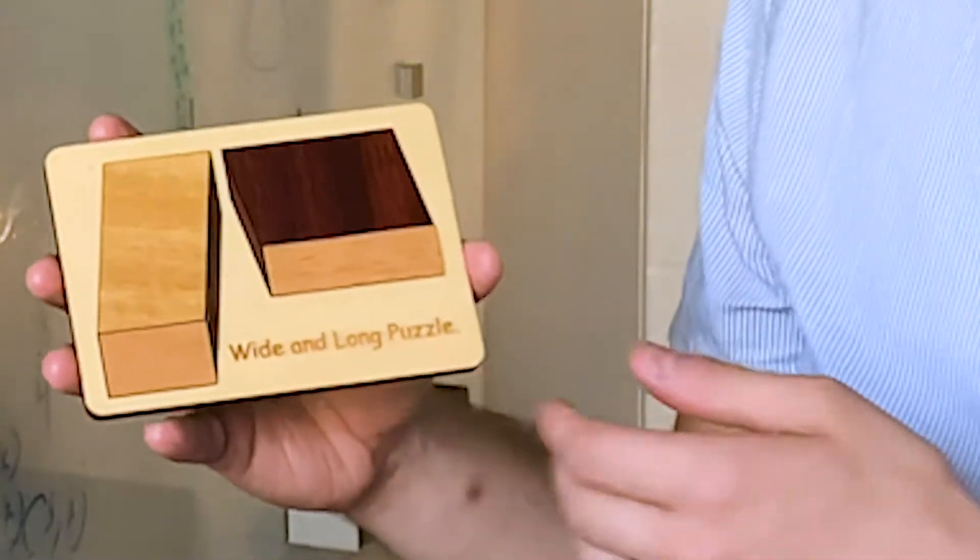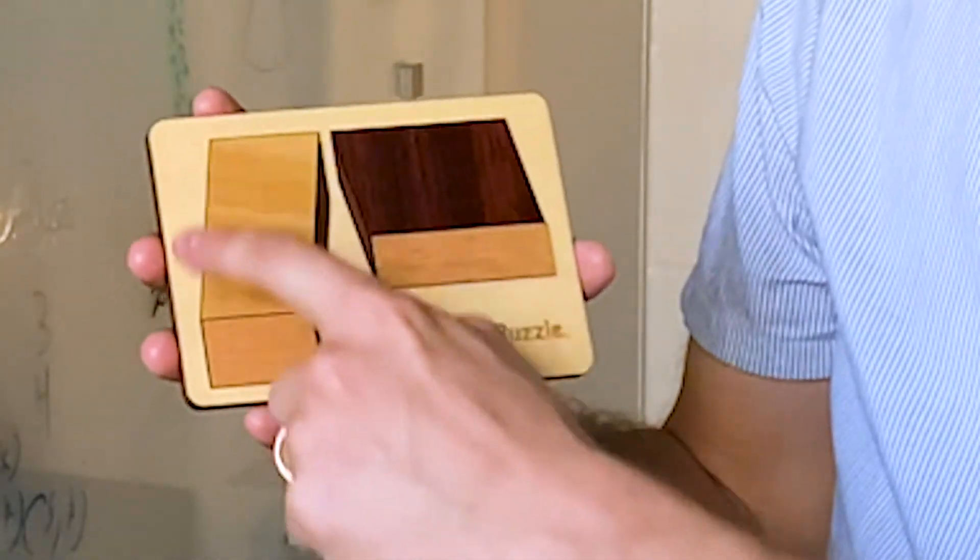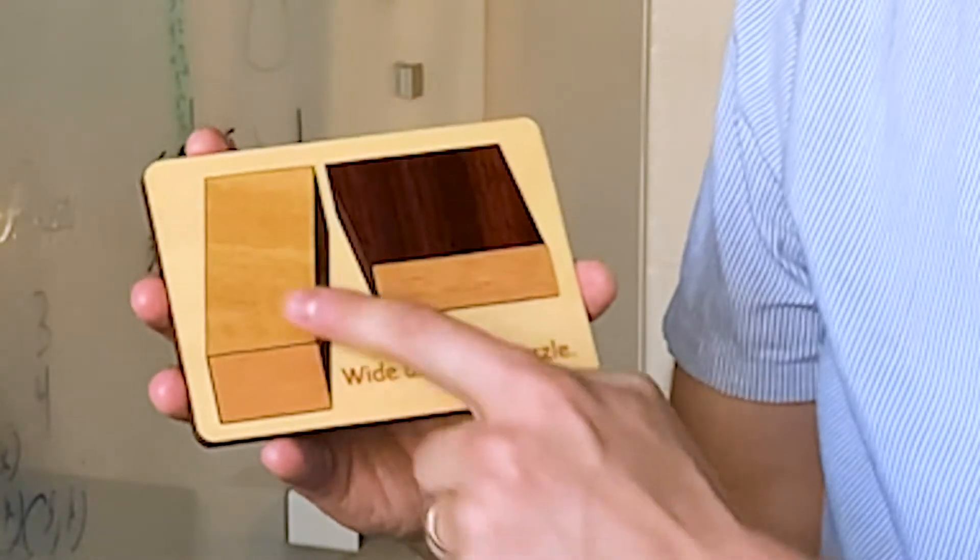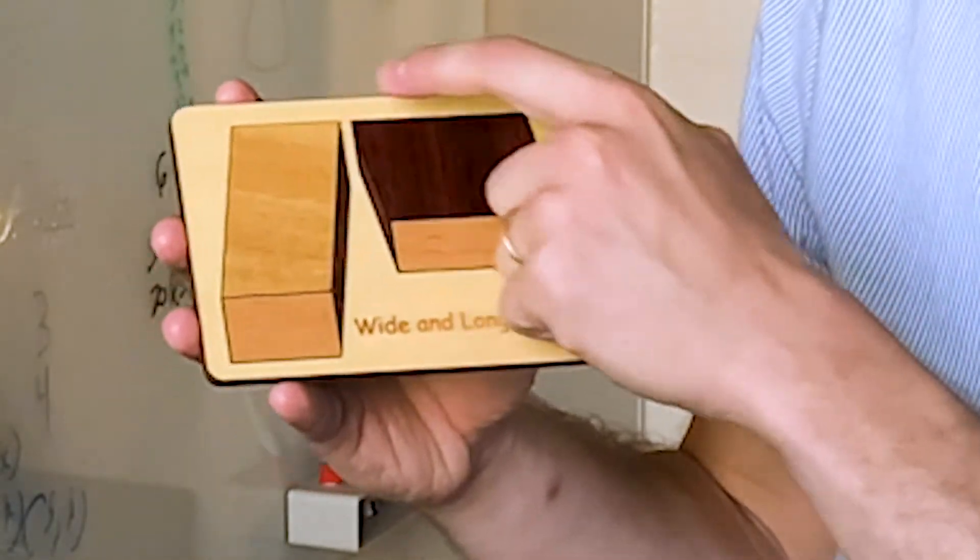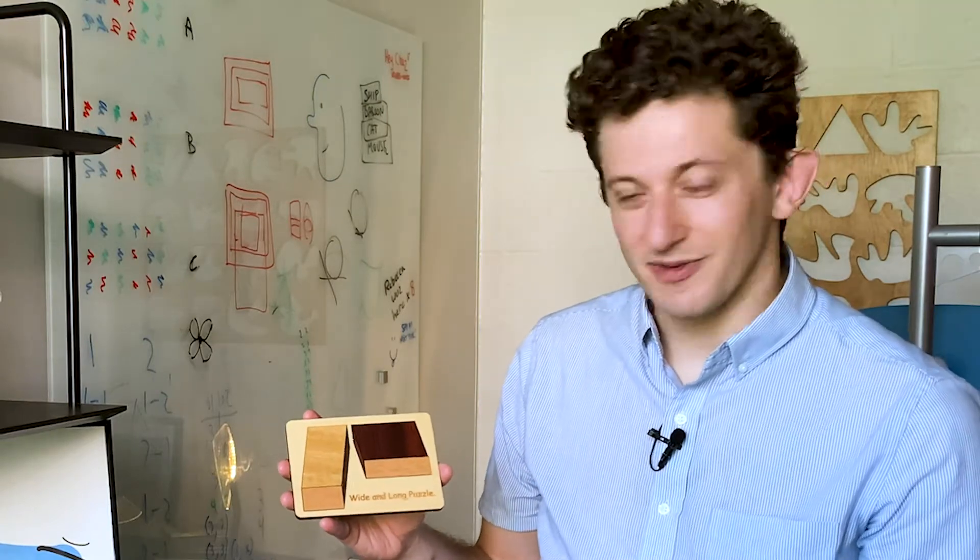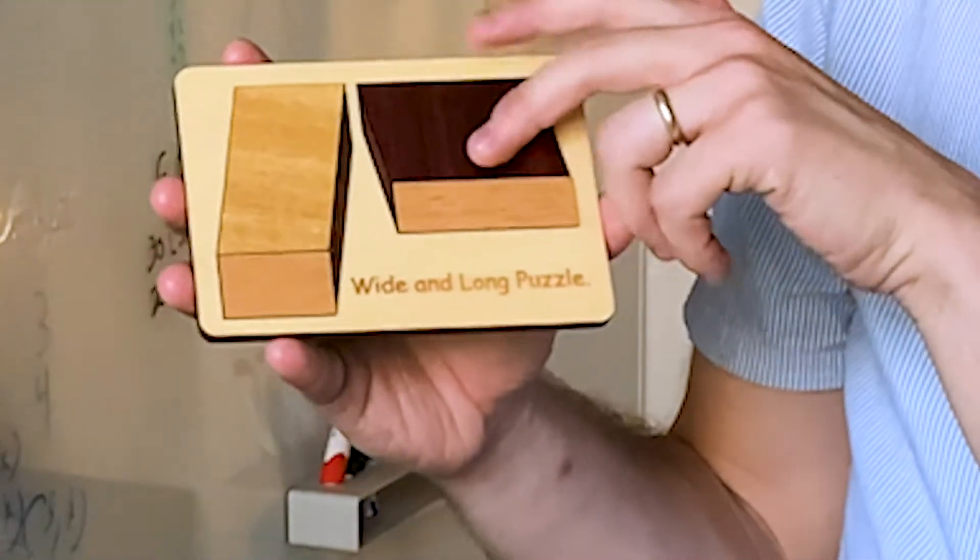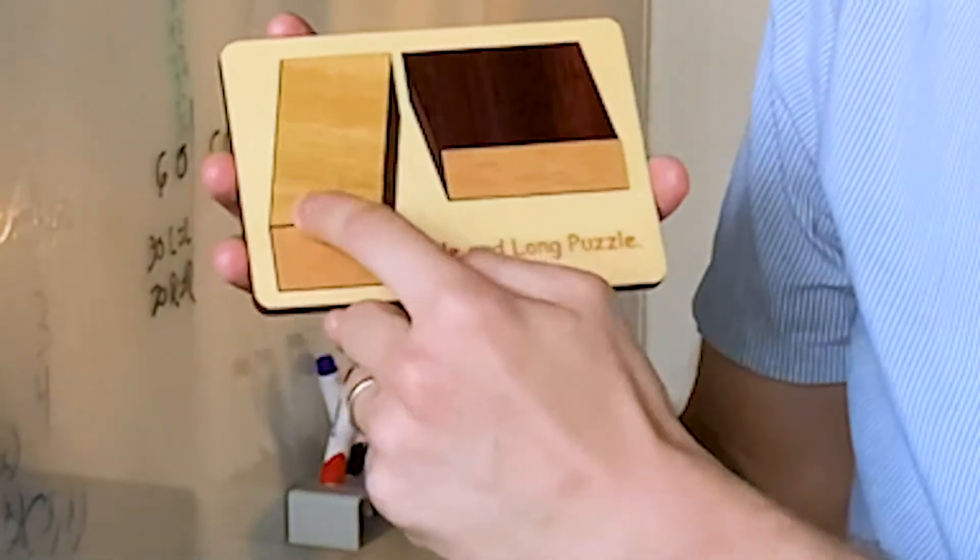What's going on in this illusion is that these two rectangular pieces, this pine-colored one and this dark mahogany one, are actually the exact same shape. But it probably doesn't look that way to you. This one looks a bit fatter than this one, and this one looks kind of skinny.